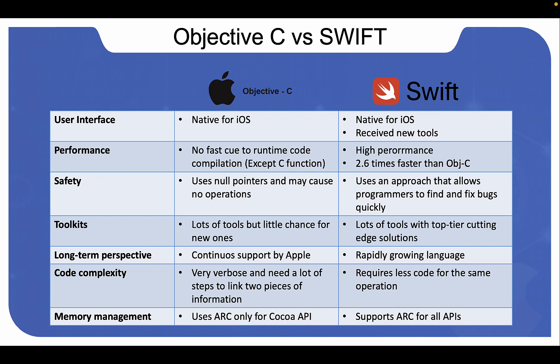Unlike its younger competitor, Objective-C has been used by Apple since the 1990s and has been the first choice for anyone creating applications for OS X and iOS. Objective-C is a combination of two languages — Smalltalk and C — making it a language with an extensive and complex syntax.